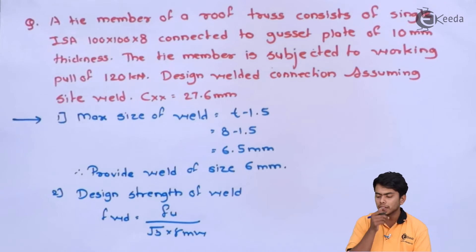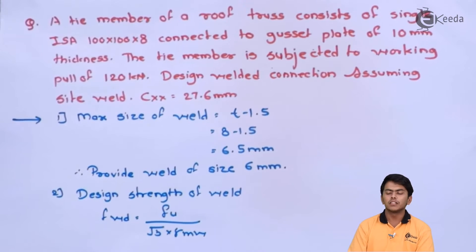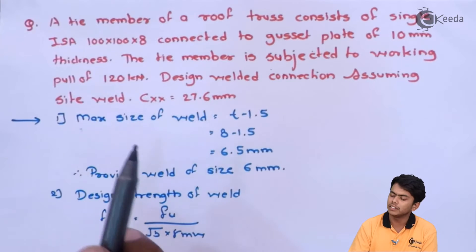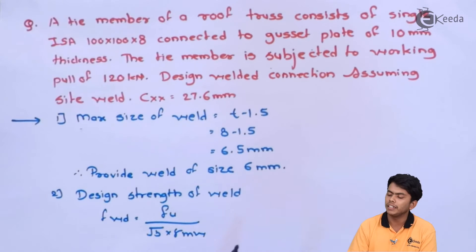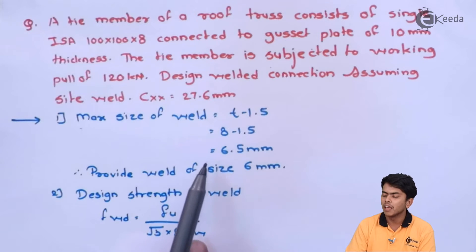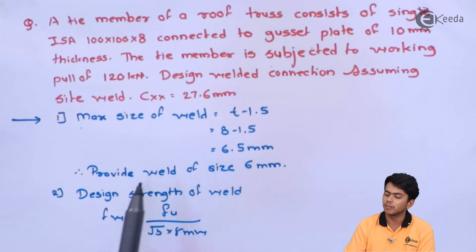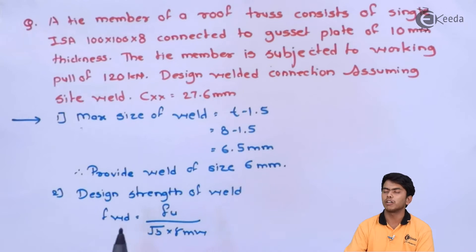Step 1 is maximum size of weld, which is T minus 1.5. T is 8 mm, so simply 8 minus 1.5, we will get 6.5 mm. Therefore we will provide weld of size 6 mm because 6.5 is maximum weld size, so we will provide a little bit less.